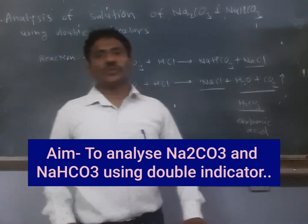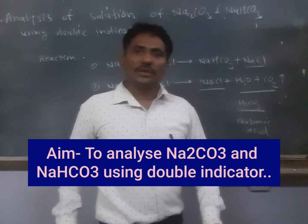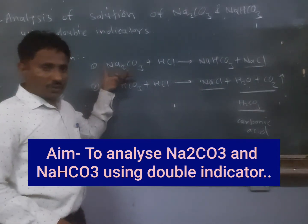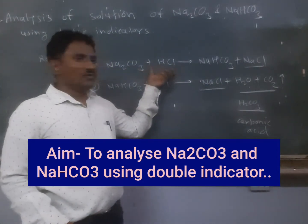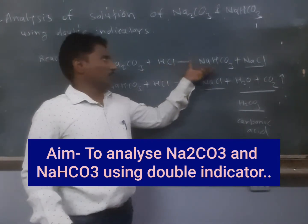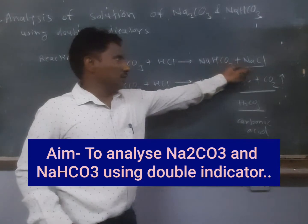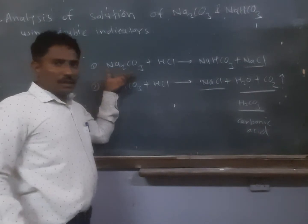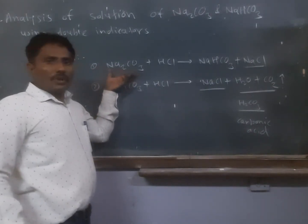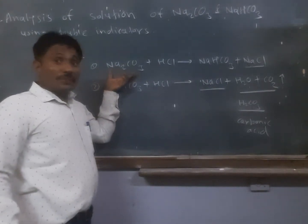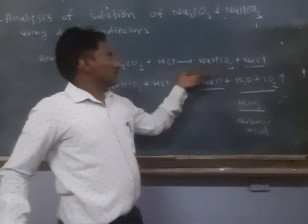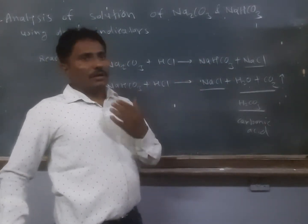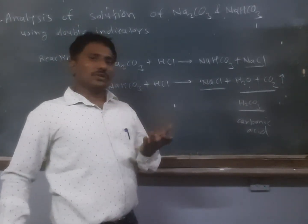In the first half of the reaction, sodium carbonate gets neutralized to form sodium bicarbonate. Sodium carbonate reacts with HCl in the first half of the reaction, forming sodium bicarbonate plus NaCl. Sodium bicarbonate is slightly alkaline, so phenolphthalein shows pink color. When we add HCl, sodium bicarbonate is forming, and since phenolphthalein is sensitive to H⁺ ions, it becomes colorless.